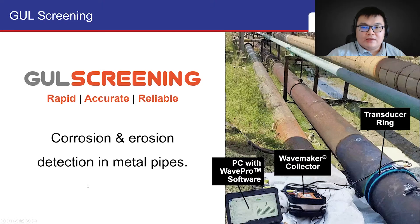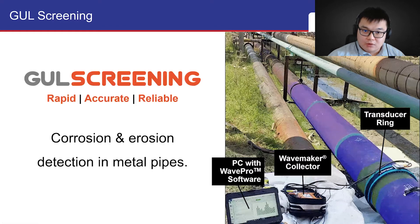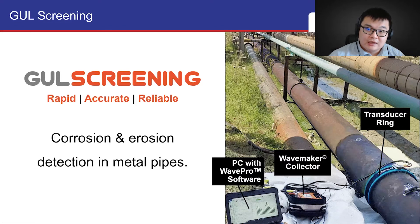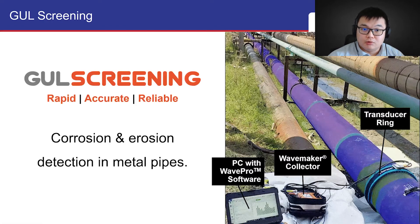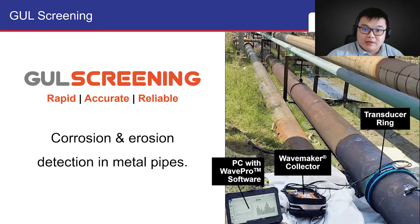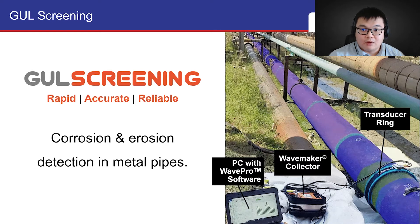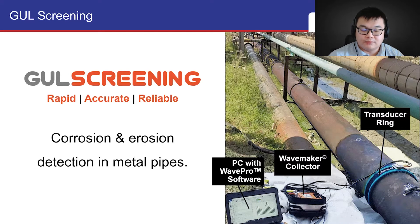As you may know, GUL screening leverages on GuidedWave technology to rapidly, accurately, and reliably detect corrosion and erosion in metal pipes. The setup typically consists of a transducer ring, WaveMaker collector, and a laptop computer with the WavePro software.